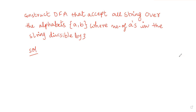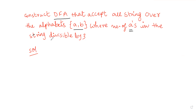Hi all, welcome to my channel. The question is: construct a DFA that accepts all strings over alphabets where the number of A's in the string is divisible by 3. So the input alphabet is {a, b}, but the condition is that the number of A's must be divisible by 3.